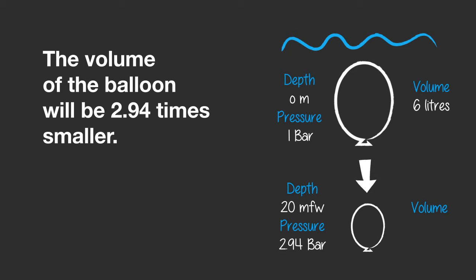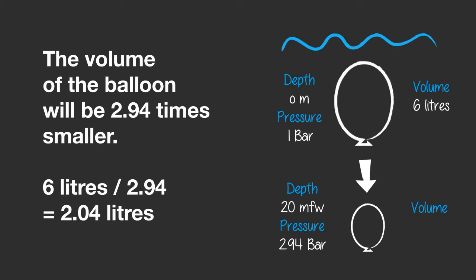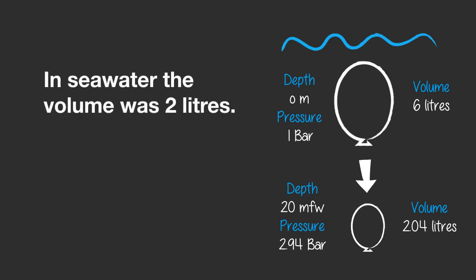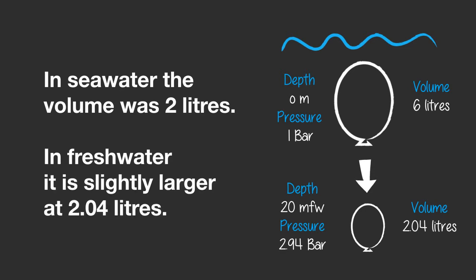So the pressure is 2.94 times higher at 20 meters, and the volume of the balloon will be 2.94 times smaller. 6 liters divided by 2.94 is 2.04 liters, so the new volume of the balloon will be 2.04 liters. In seawater the volume was 2 liters, and in freshwater it is slightly larger at 2.04 liters.